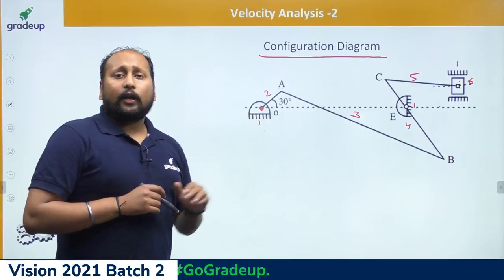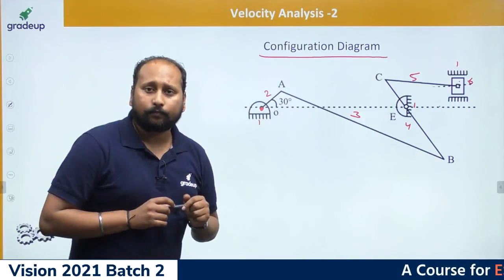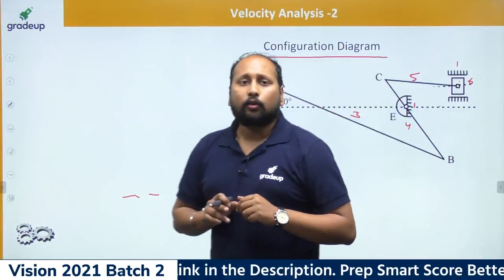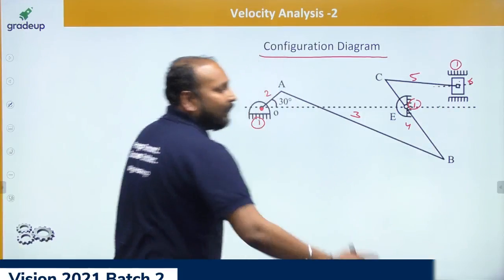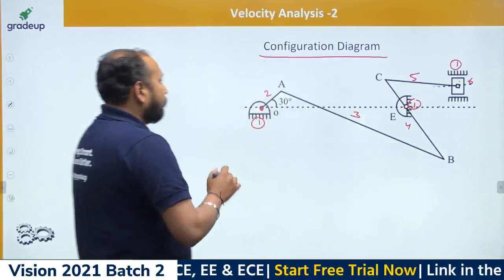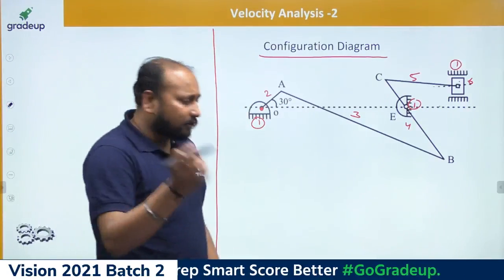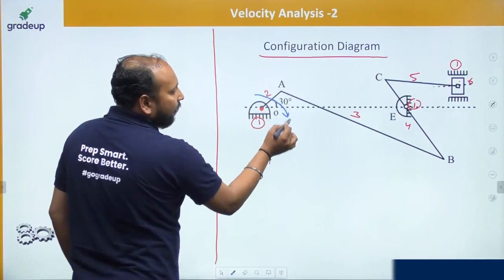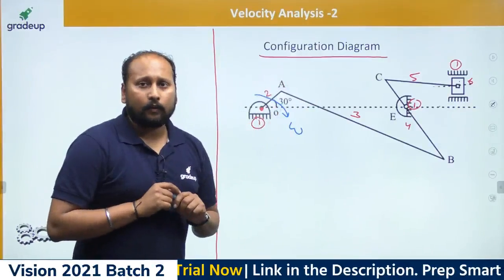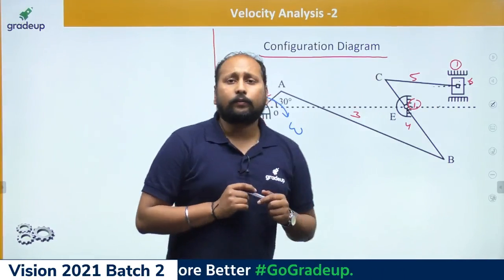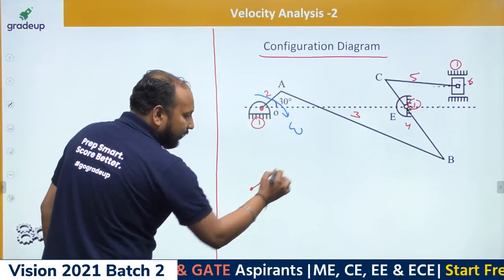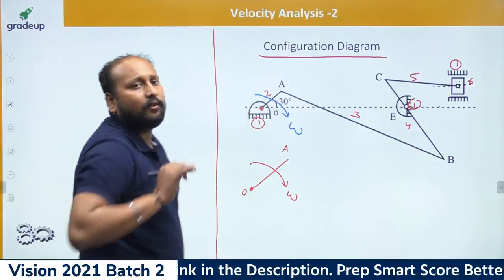Using this configuration diagram, we will draw the velocity triangle. Let us suppose link OA is rotating with angular velocity omega in the clockwise direction. The velocity of point A will be omega times the distance OA, giving the linear velocity. The direction will be perpendicular to OA — in this case downward. I know the omega value and the length will be given in the problem, so we calculate the magnitude of V_A. Let us suppose this comes out to be 20 meters per second.